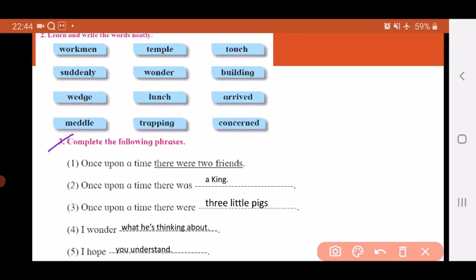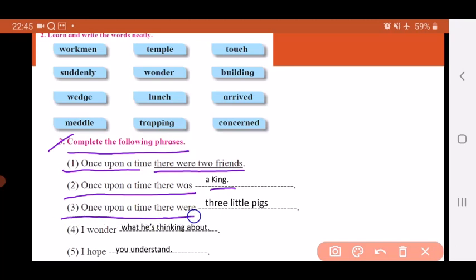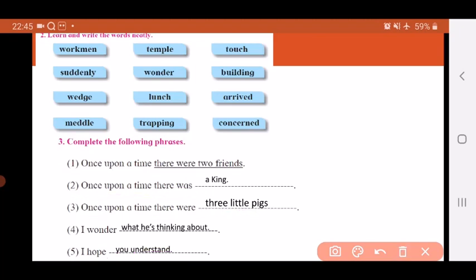Question 3: Complete the following phrases. Toh yaha par kuch sentences diye hai jo incomplete hai. Aapko inhe complete karna hai aapne khud ke shabd use karke. For example: Once upon a time there were two friends. Yaha par aap khud ka bhi likh sakte ho. Once upon a time there was a king. Once upon a time there were three little pigs. I wonder what he is thinking about. I hope you understand. So in this way children, we have completed the phrases.